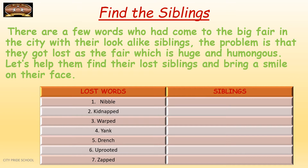For example, 'nibble' — what as per you can be the sibling of nibble? What sounds more like nibble or has the same meaning as nibble? In the same way, you are going to write at least two siblings each for seven lost words. You will do this activity in your English grammar notebook, naming the activity as 'Find the Siblings' with the topic name 'Verb' on top. Draw this column with the lost words and siblings, and then we are going to discuss it and see how much you have understood.